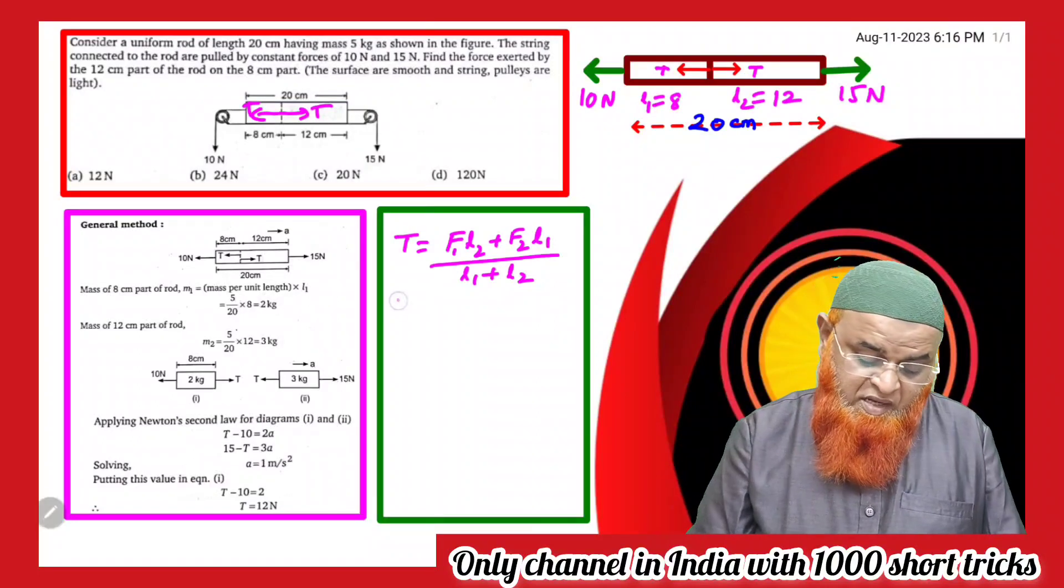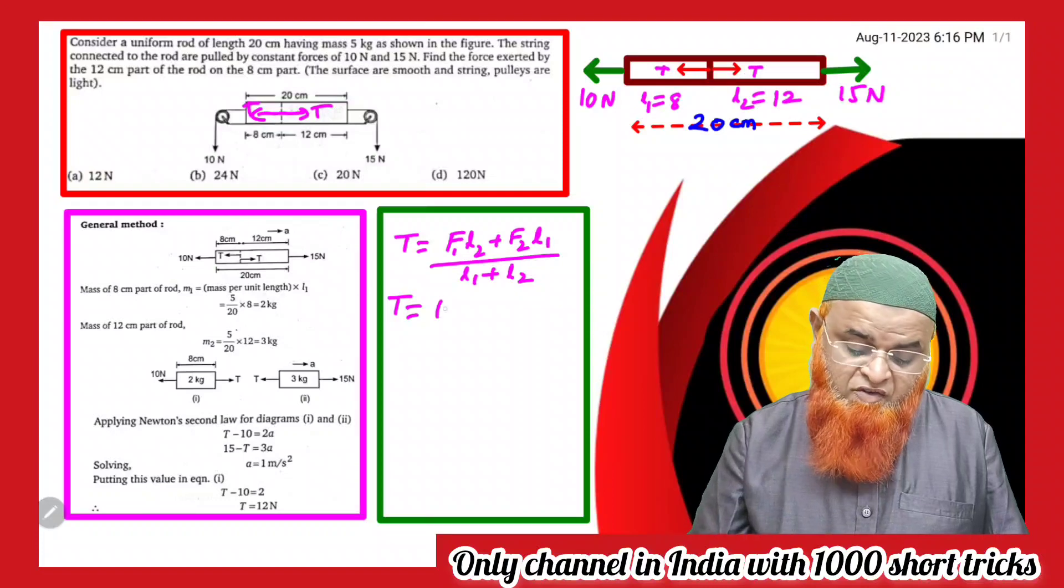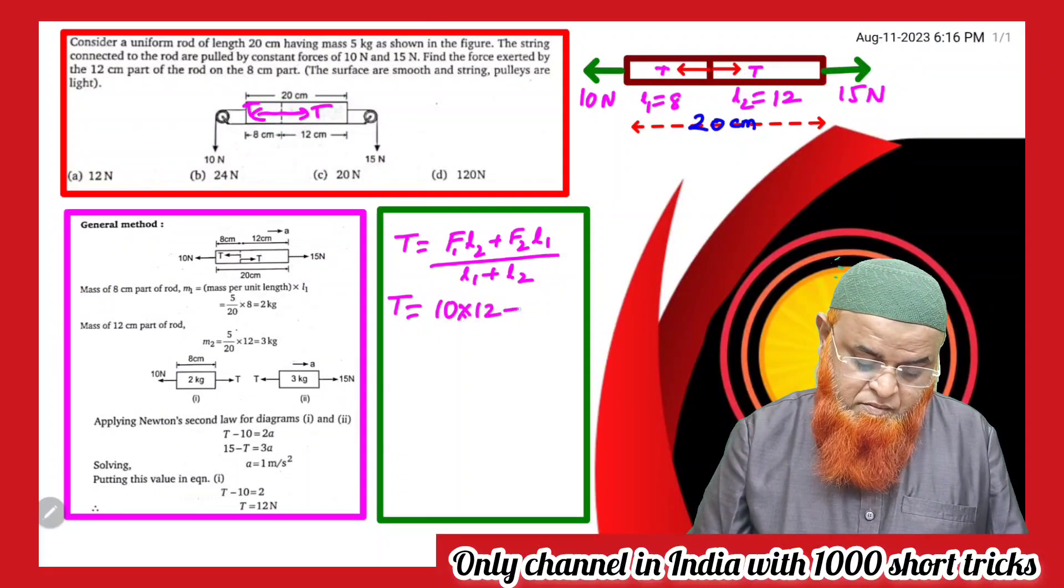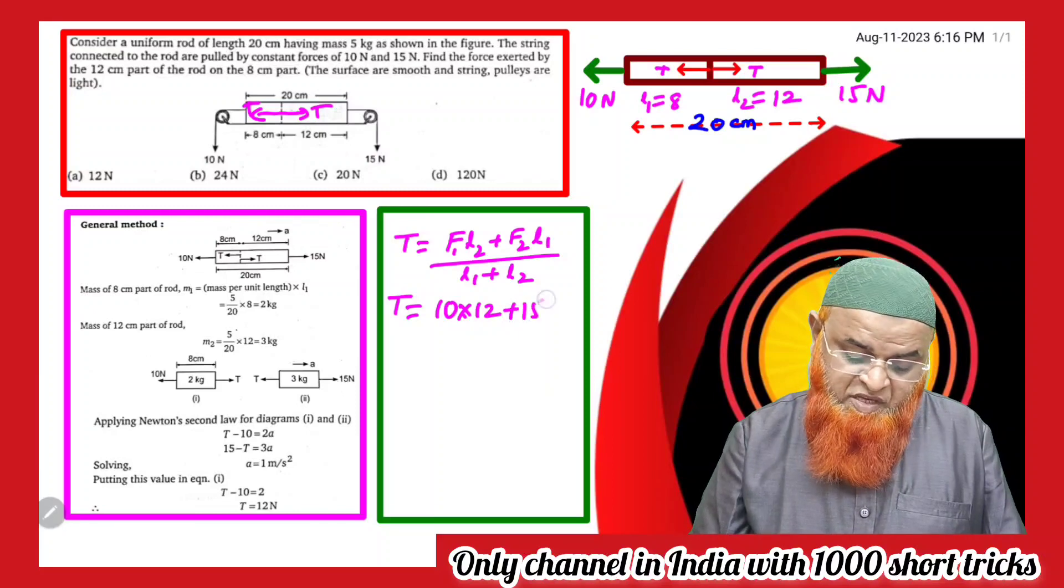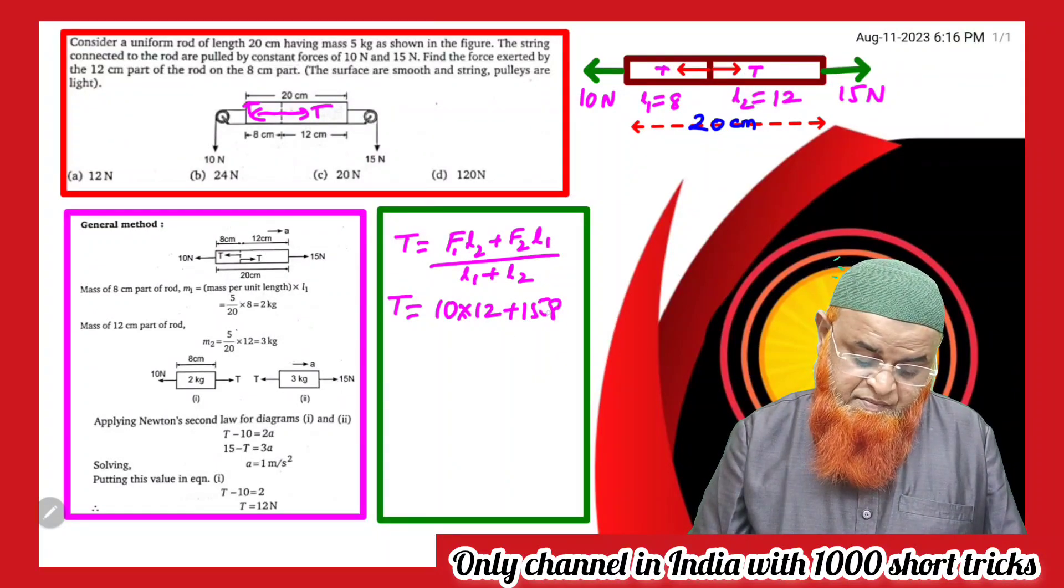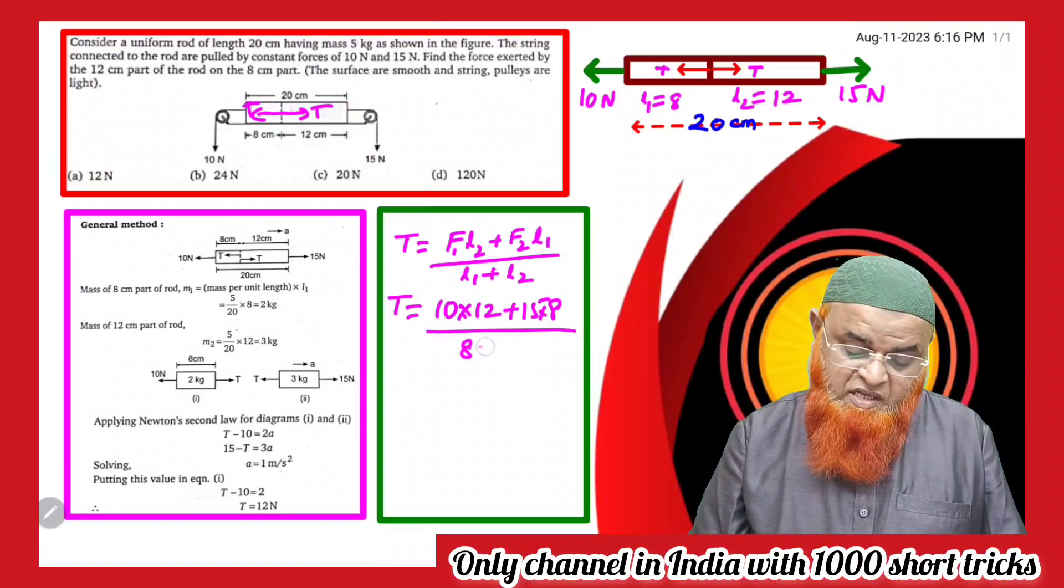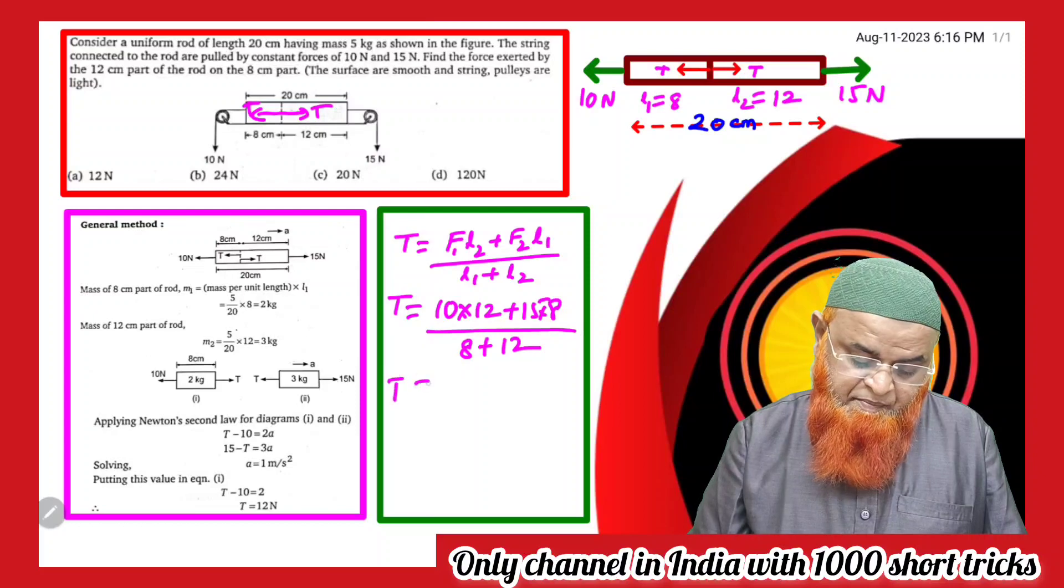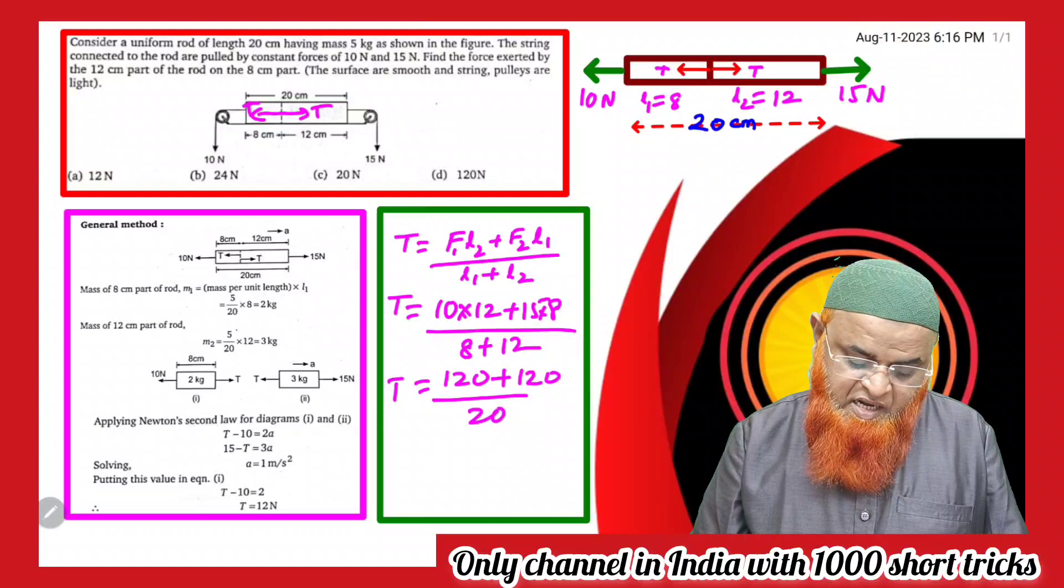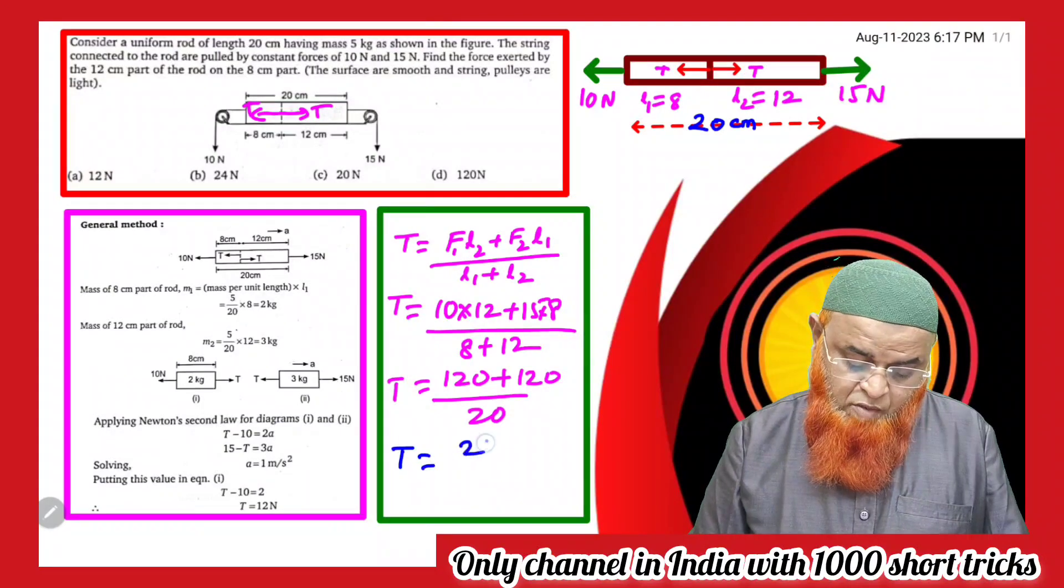So T is equal to F1 times L2. F1 means 10 newtons and L2 means 12, plus F2 means 15 and L1 means 8, into 8, divided by L1 plus L2, that is 8 plus 12. So therefore, how much are we getting? 120 plus 120 divided by 20. So finally we're getting T equals 240 by 20. So your answer is going to be 12 newtons.